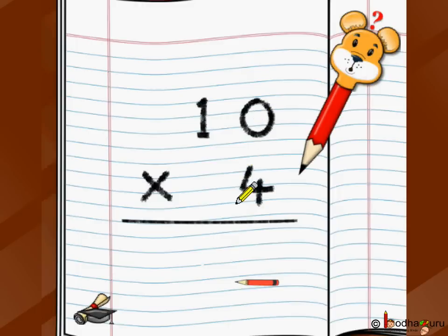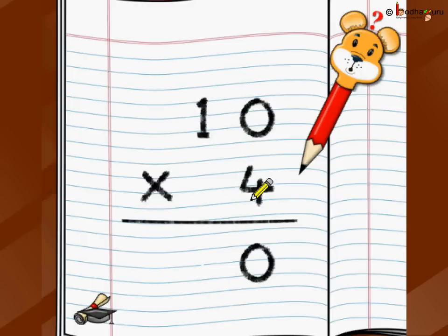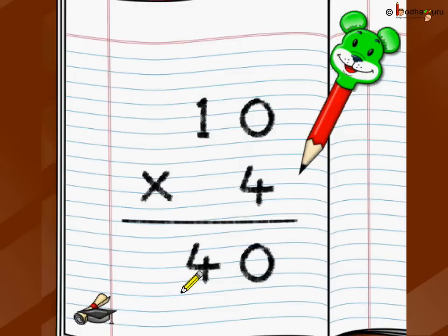We start with the multiplier and begin from the units position — in multiplication we go from right to left. So we do four multiply by zero; anything multiplied by zero is zero. Then we take the same four and multiply by the next position: four multiply by one is four. So the final answer is forty — that is, ten dogs each have four legs, so we have a total of forty legs.